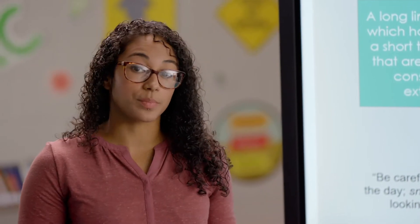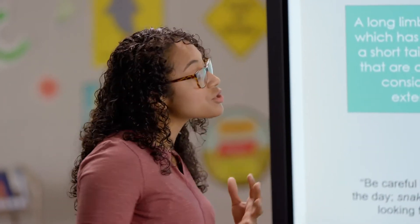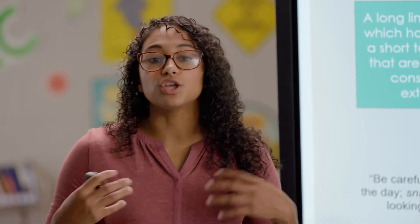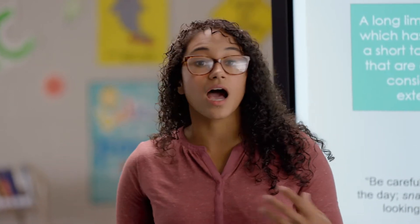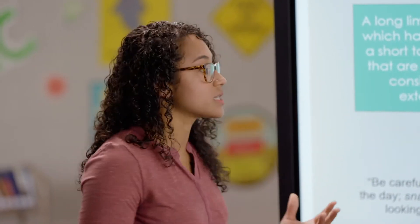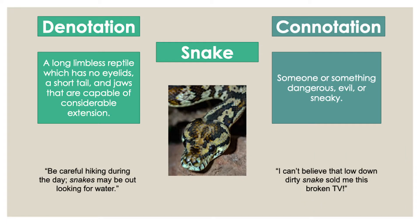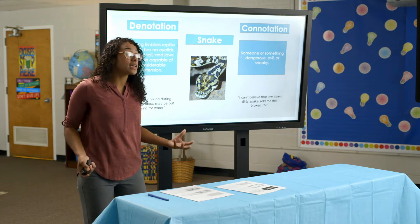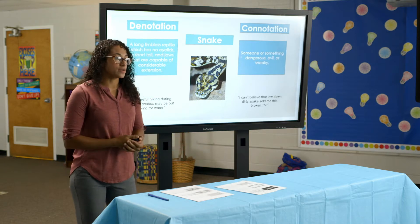The connotation behind 'snake' is often someone or something that is dangerous, evil, or sneaky. You might see the connotative meaning of the word snake used in a sentence like this: 'I can't believe that low down dirty snake sold me this broken TV.' In this context, they are not talking about a reptile — reptiles don't sell TVs. They are talking about someone who's sneaky and sold them a broken TV.